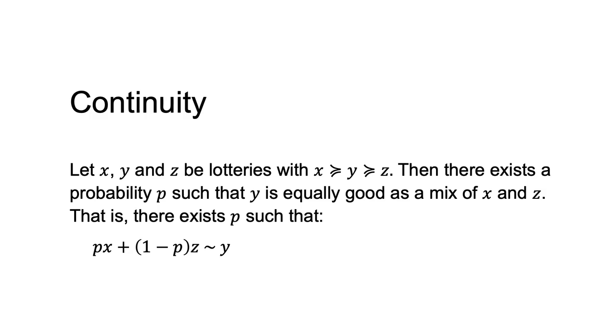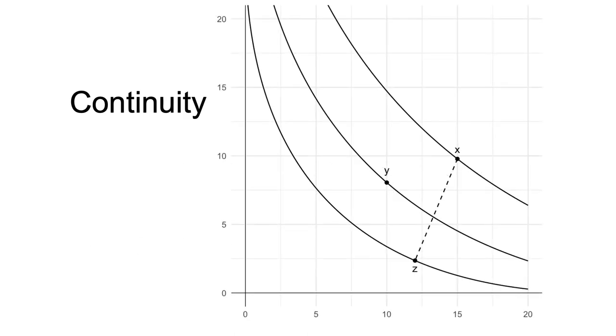That is, there exists p, such that the agent is indifferent between px plus 1 minus p times z and y. This diagram illustrates continuity under this definition.